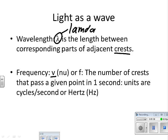And frequency, you're going to see the letter V. It's also called nu in Greek. But it's the number of crests at points given per second in time. That unit's going to be either cycles per second or in hertz. Whereas wavelengths can be in any type of unit you want it to be.